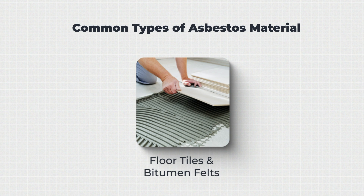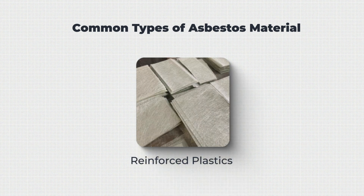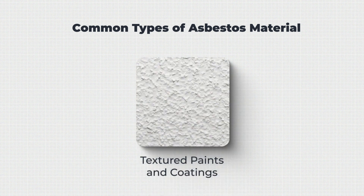Floor tiles and bitumen felts were bonded with asbestos fibres, making them strong and durable. Sealants, adhesives and putties contained asbestos fibres so that they could be effectively used in hot water systems and boilers. Reinforced plastics used asbestos fibres for additional strength, useful for systems, handles and electronic equipment housing. Textured paint and coating, sometimes found in Artex and other decorative coatings, used asbestos for stability and extra binding qualities for patterning.